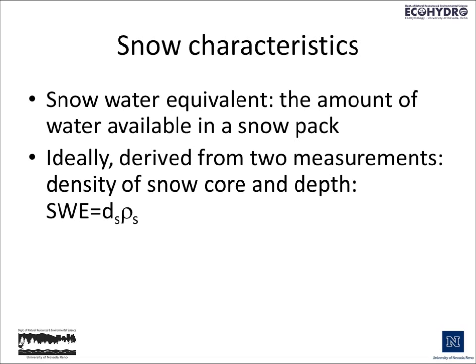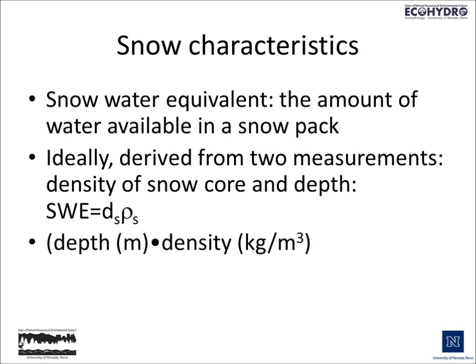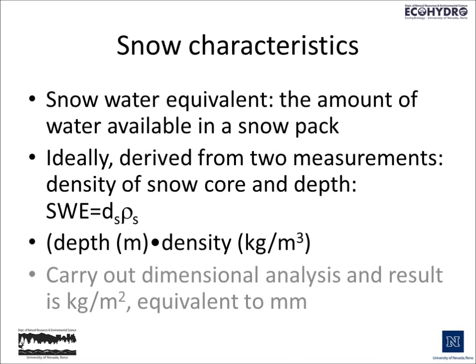Snow water equivalent is usually derived from two measurements: the density of a snow core and the depth. Snow water equivalent equals the density of the snow core times the depth of the snow core. Carrying out the unit analysis, depth is usually in meters and density is in kilograms per cubic meter. The result is in kilograms per square meter, which is the equivalent of millimeters — again, a linear dimension.